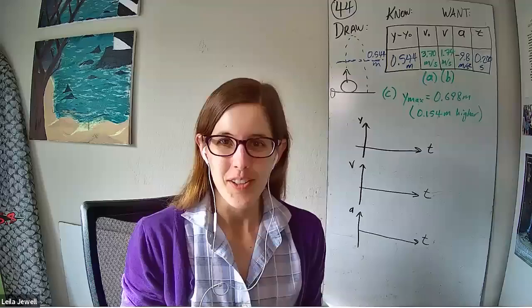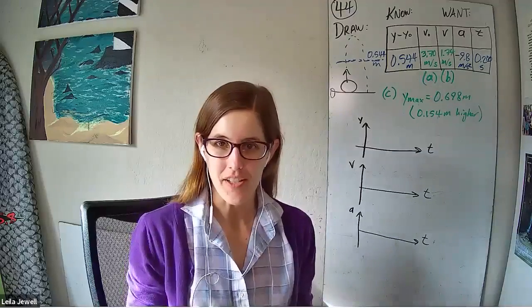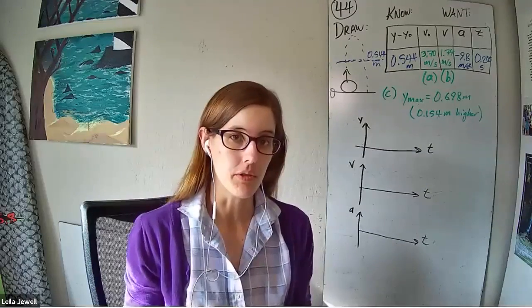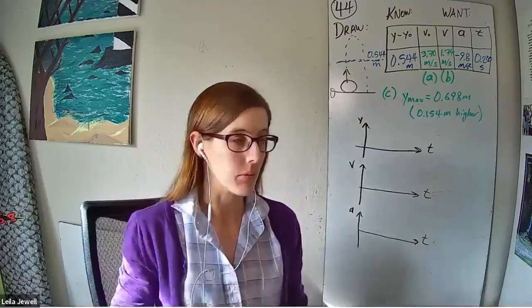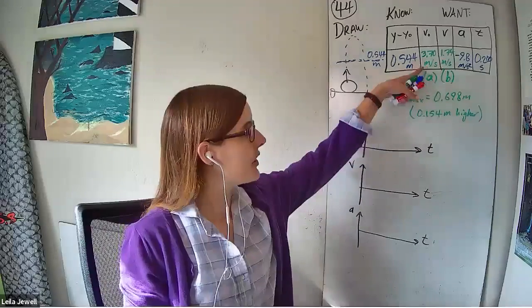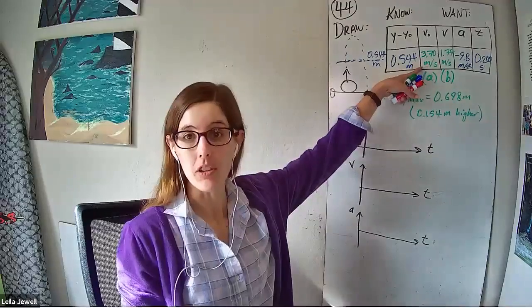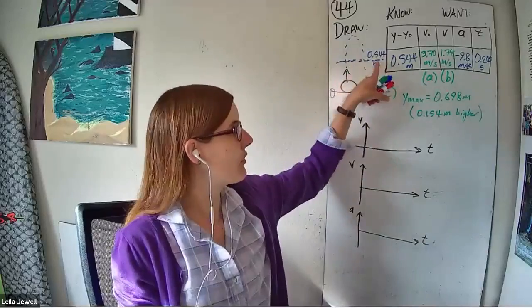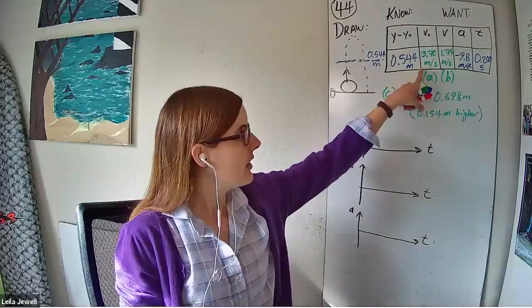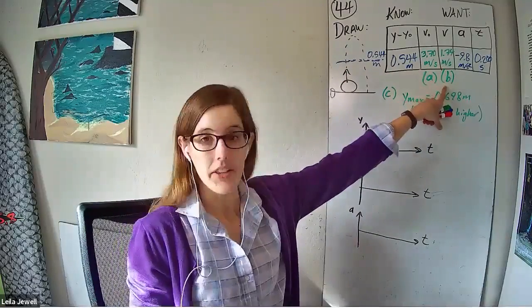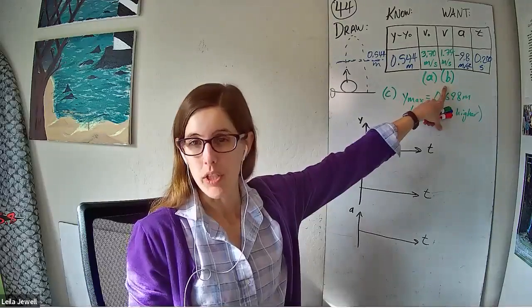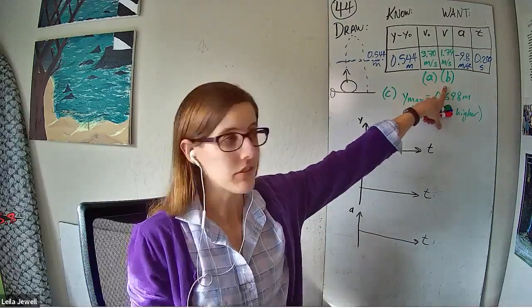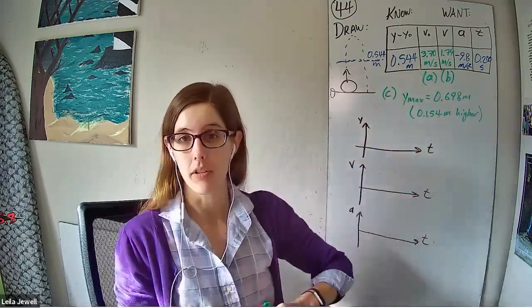Hey again. We discussed problem 44 in class and gave an outline of the solutions to parts A, B, and C, where we had to solve for the initial speed that the armadillo left the ground when he jumped and reached this 0.544 meters height. We found that speed at that particular point, which we called the final velocity, because it was the final velocity for that consideration of the segments.